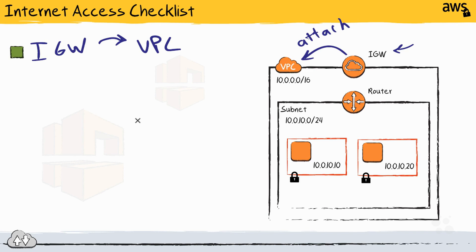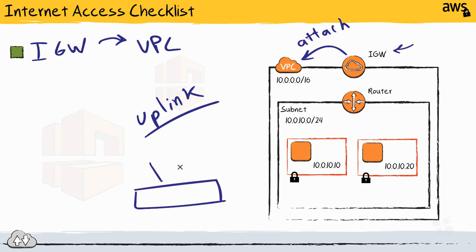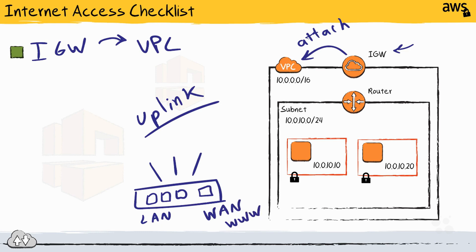I usually describe the internet gateway as an uplink. Imagine your home router — it has little ports labeled local area network, and another port labeled WAN, wide area network, or WWW, or internet. That wide area network or internet port is your internet gateway, your uplink out to your internet service provider. The internet gateway in our VPCs works very similarly to this.